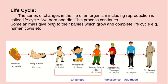Some animals directly give birth to their babies. Some animals give birth and their children grow and complete their life cycles, passing through other stages. For example, let us look at the human life cycle.